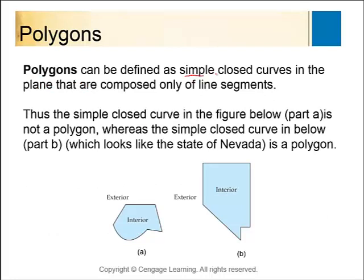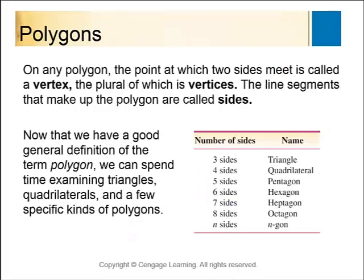A polygon is simple and closed — meaning it can't cross in on itself — and it's only composed of line segments. So if a figure is simple closed but has curves, it's not a polygon. But if it's simple closed and only composed of line segments, it is a polygon. All the named polygons — triangle, quadrilateral, pentagon, etc. — are polygons because they are simple, closed, and have straight lines, and the name tells you the number of sides.